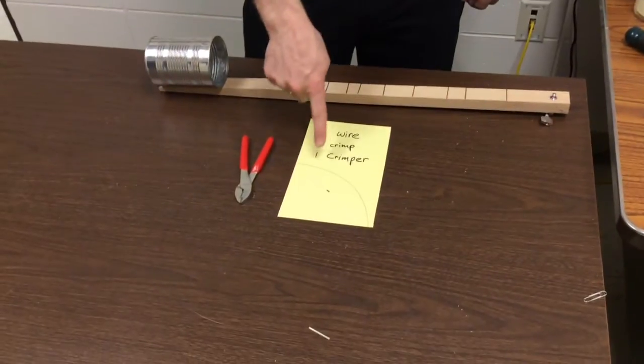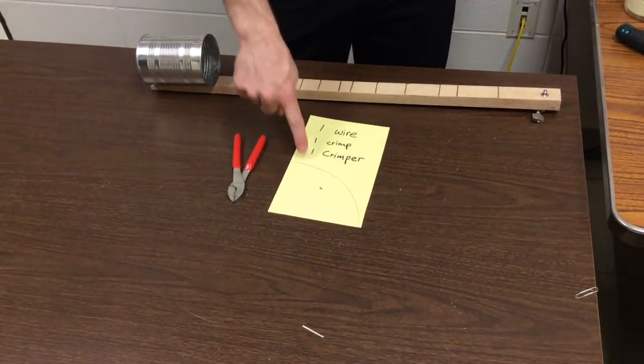What you'll need is your wire length, one crimp, and the crimper.